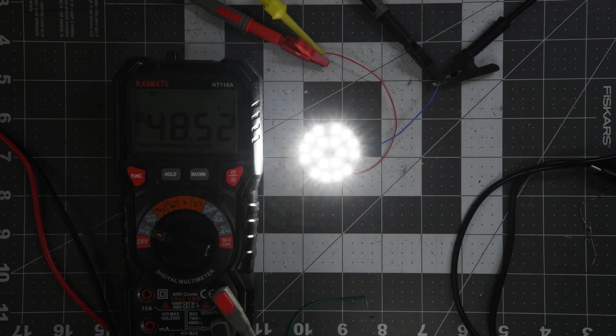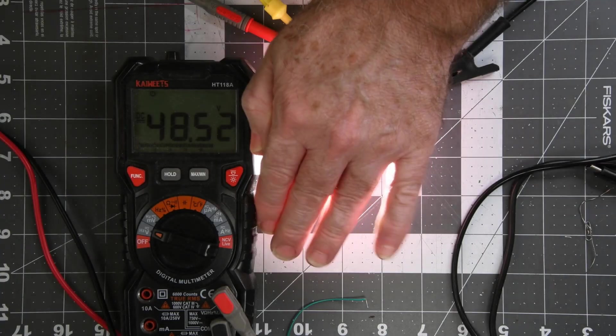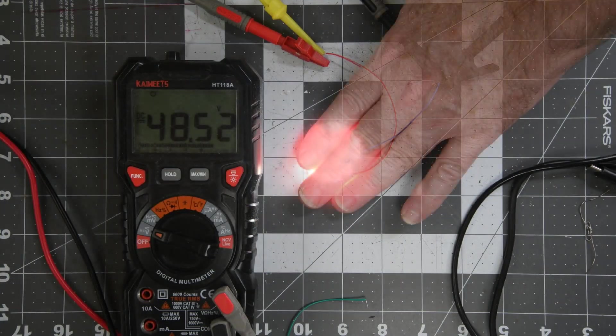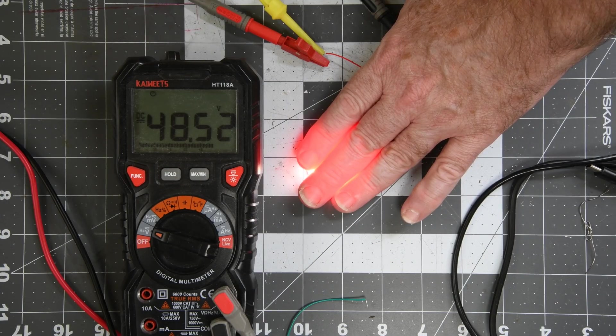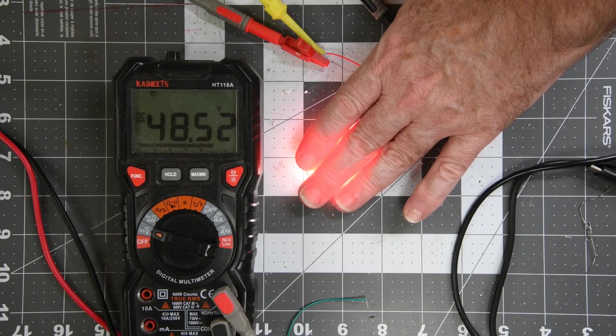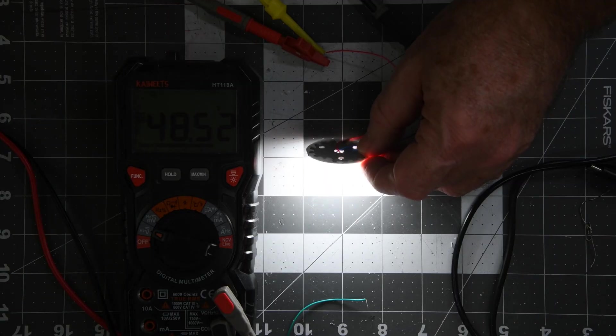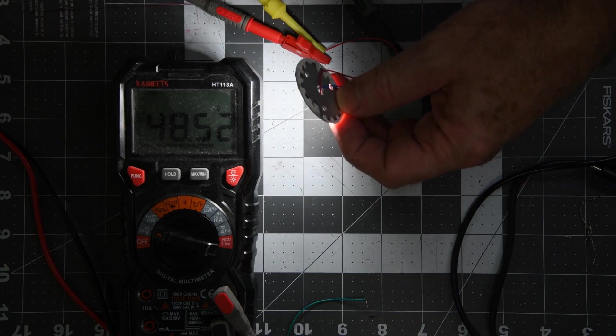Now I'm at 50 milliamps and the voltage is right at 48 and a half volts. I'm right around 2.5 watts here. At two and a half watts, the LED panel is not too hot to handle. I can keep my hand on it. So it's less than 50 degrees C.